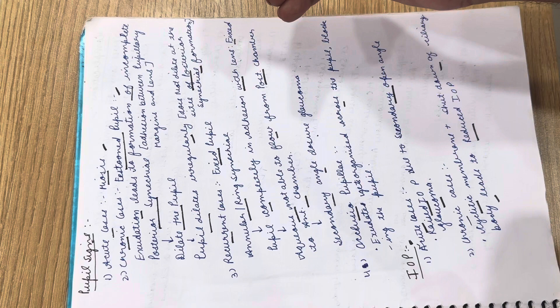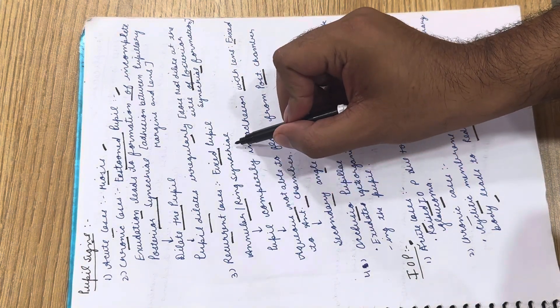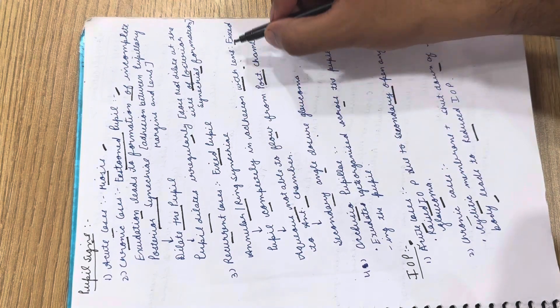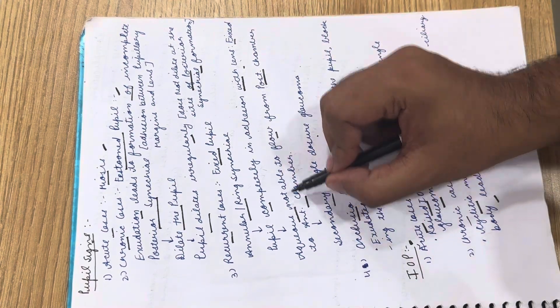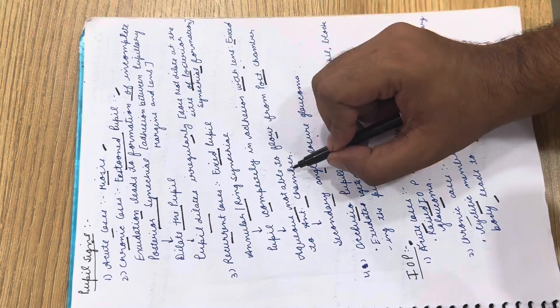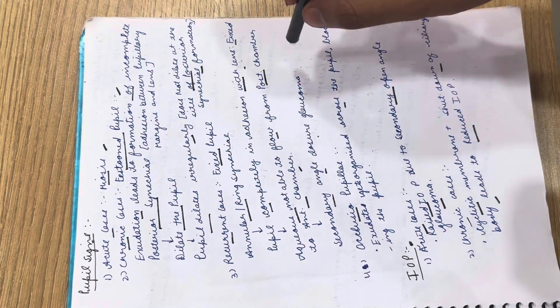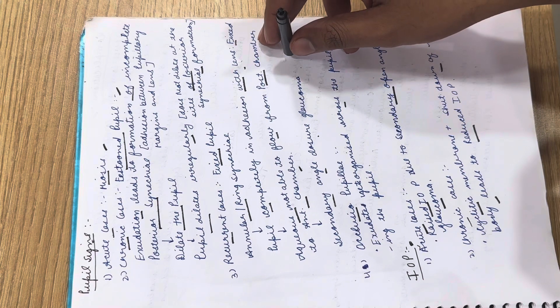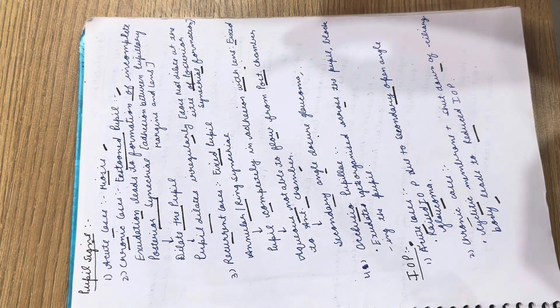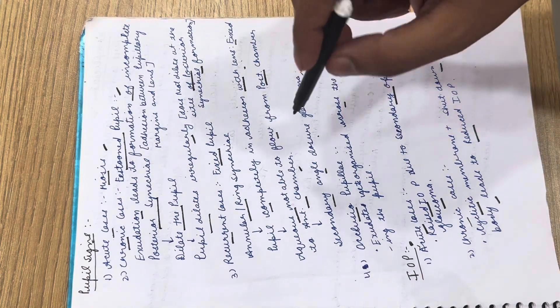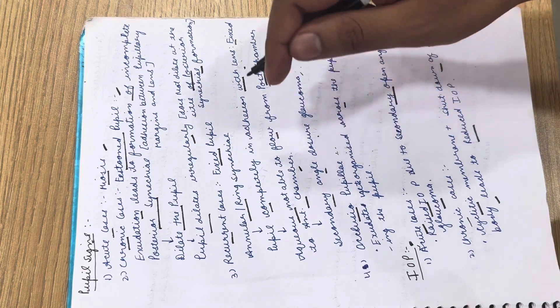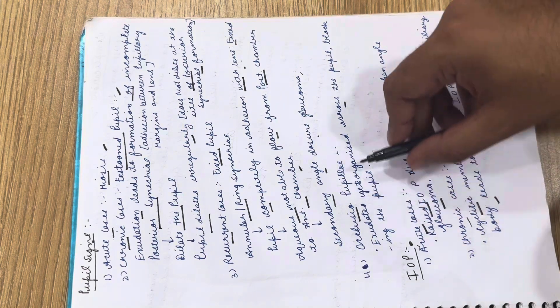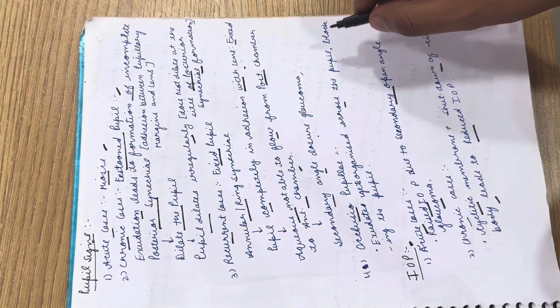In recurrent cases we see a fixed pupil due to formation of annular or ring synechiae. The pupil completely adheres with the lens, and aqueous cannot flow from posterior to anterior chamber, causing secondary angle closure glaucoma. Last is occlusio pupillae, where exudates get organized across the pupil and block it.